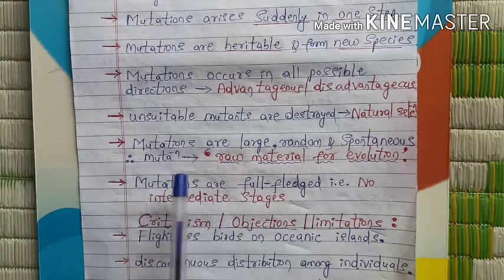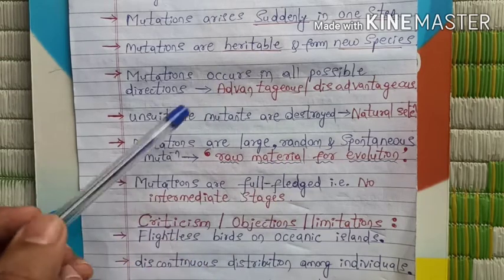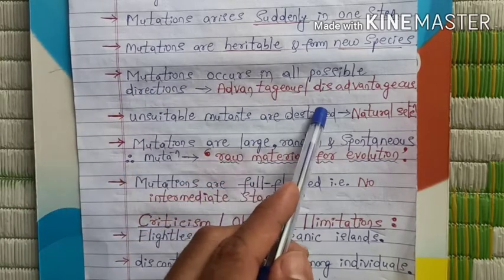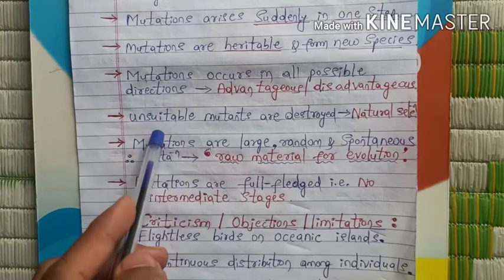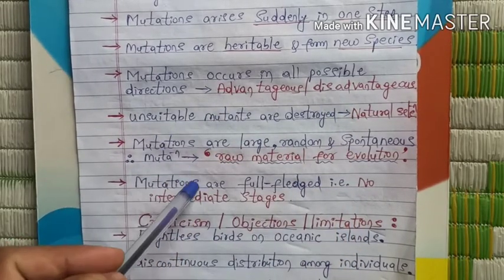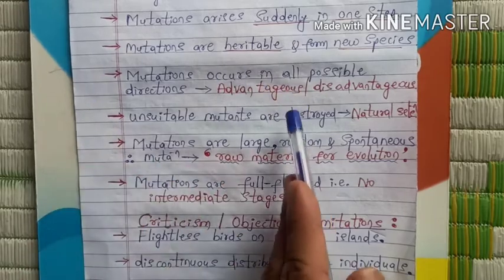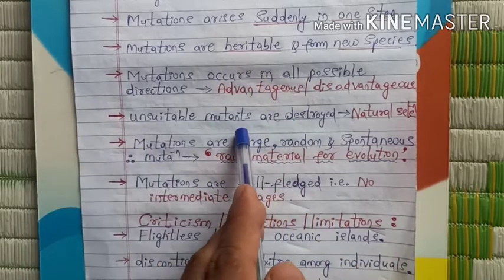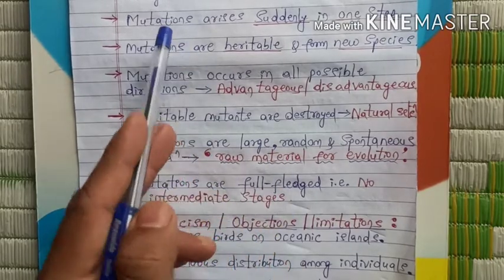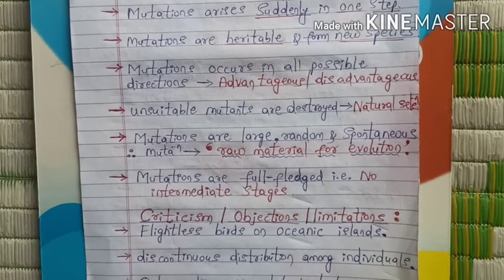The last postulate is that mutations are full-fledged. This means there is no intermediate stage. For example, in human evolution there are different stages, but with mutations there is no intermediate stage — there is a direct change from one organism to another. That is the meaning of full-fledged: no intermediate stages are present during evolution.